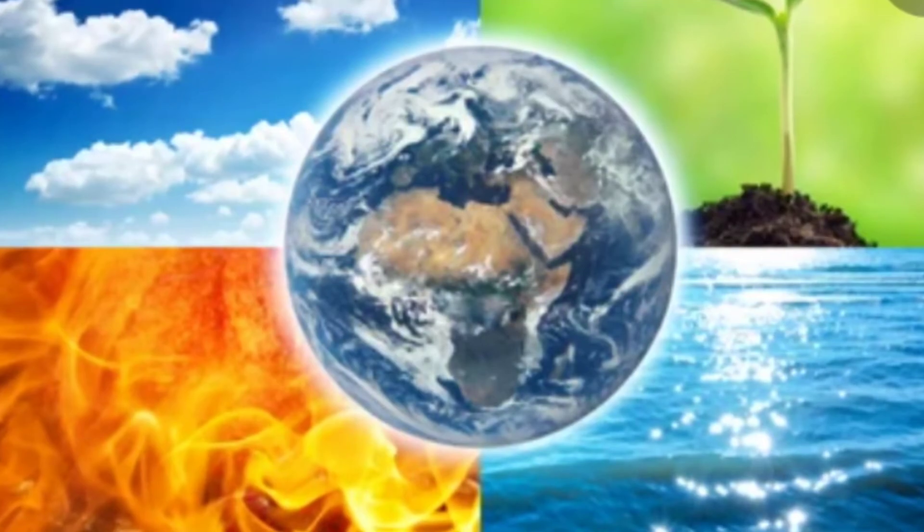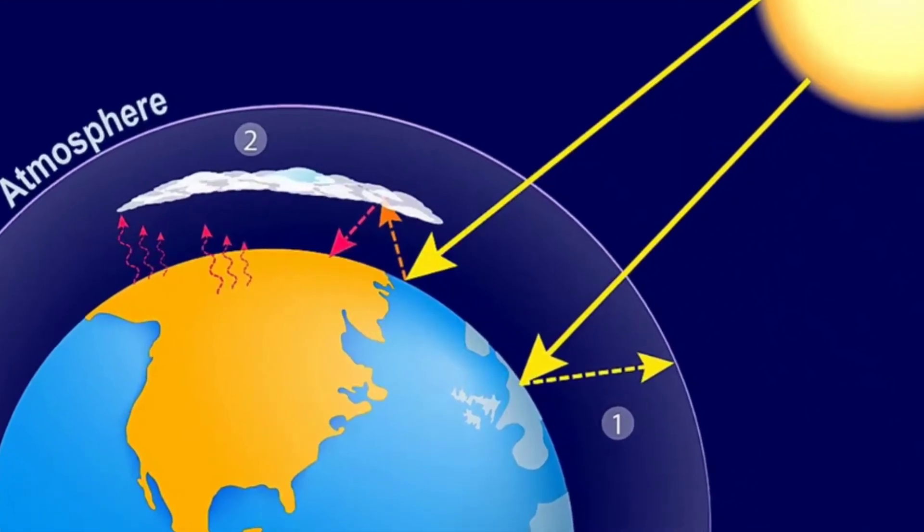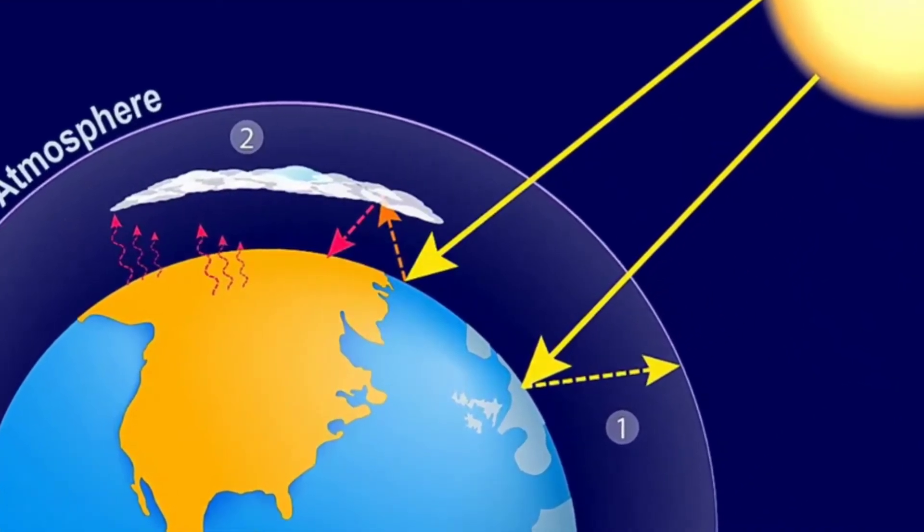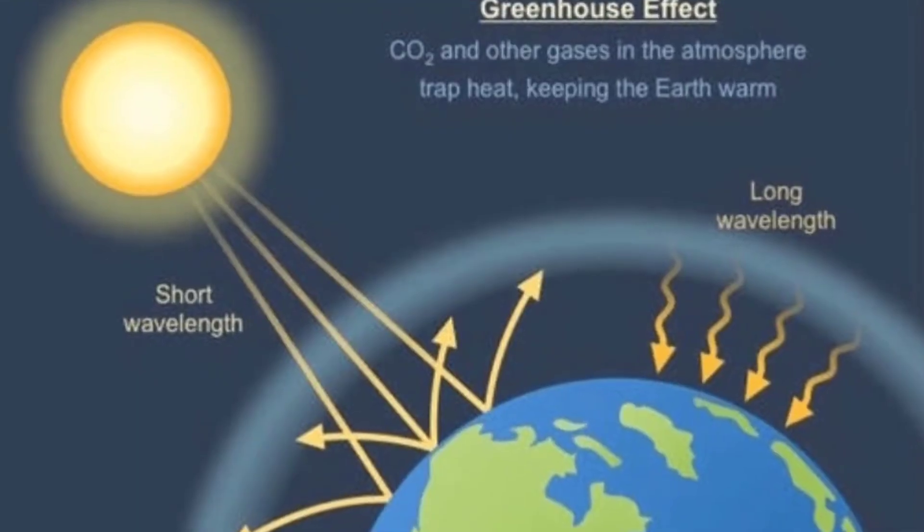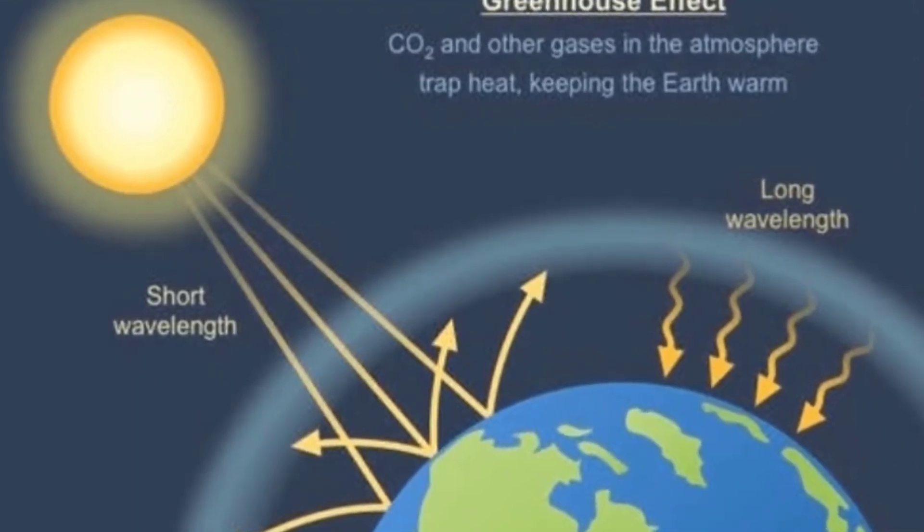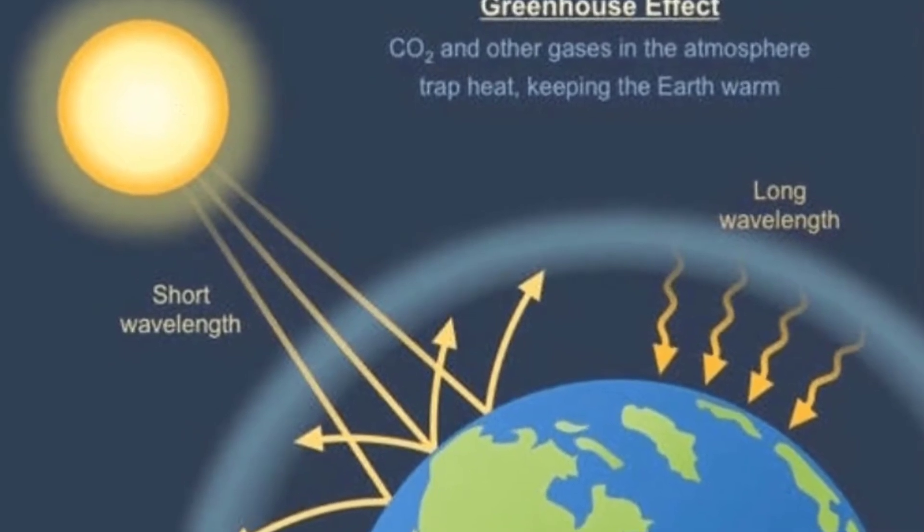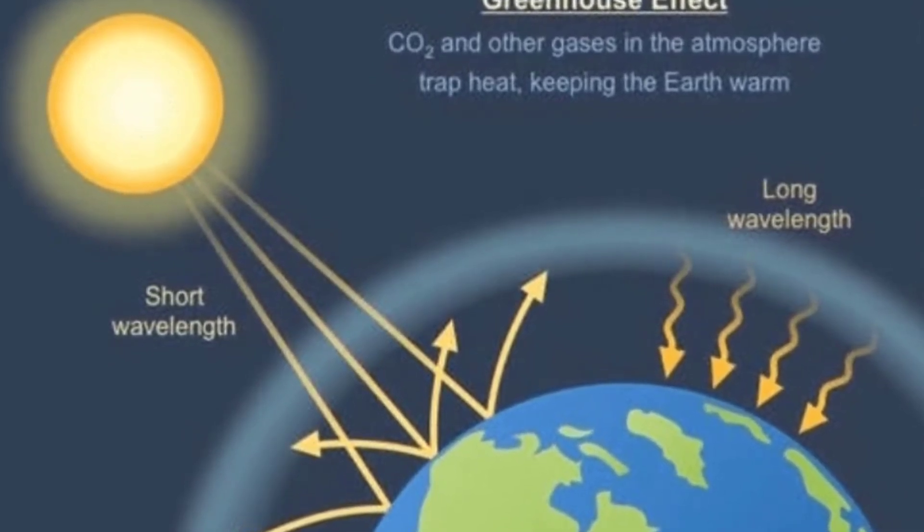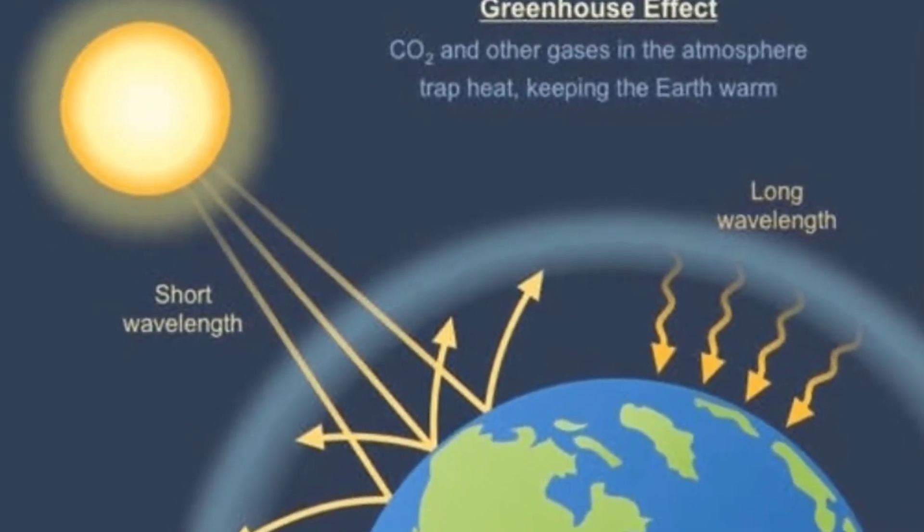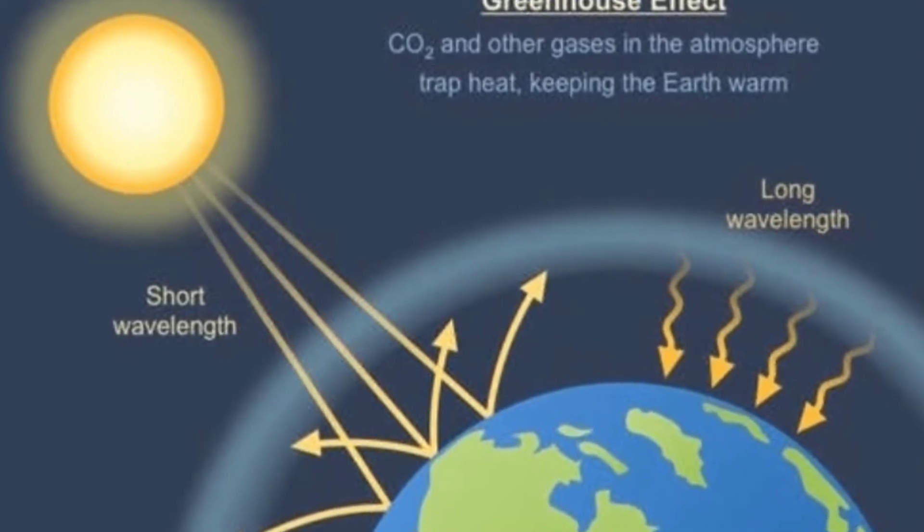Atmosphere traps heat, shields the surface from harmful radiation, and provides chemicals needed for life such as nitrogen and carbon dioxide. Earth's gravity is strong enough to hold an atmosphere that holds gas molecules and insulates and shields the Earth from radiation and small to medium-sized meteors.